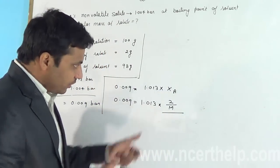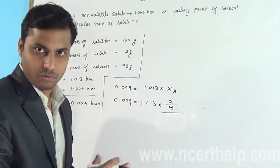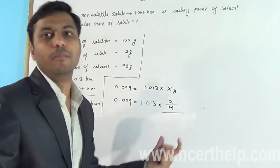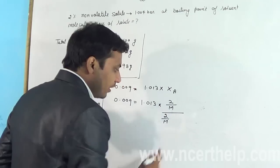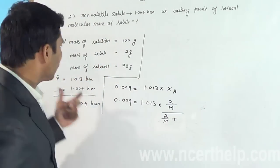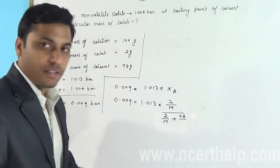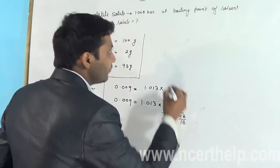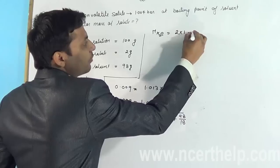This is number of moles of solute divided by total number of moles of solution. That means number of moles of solute plus number of moles of solvent. So number of moles of solute I have already shown you will be 2 by M, plus number of moles of solvent. What is solvent? Water is solvent, and its mass is 98, and 98 is divided by molar mass of water. Molar mass of water is 18. Molar mass of water is equal to—there are two hydrogen and one oxygen.